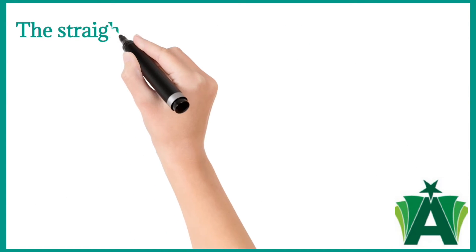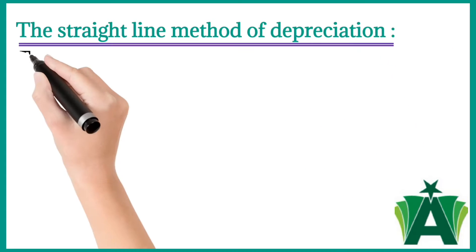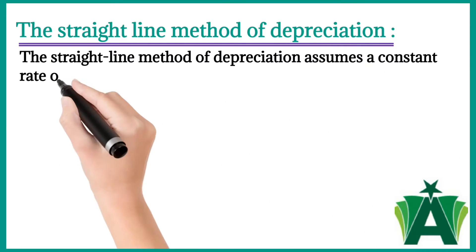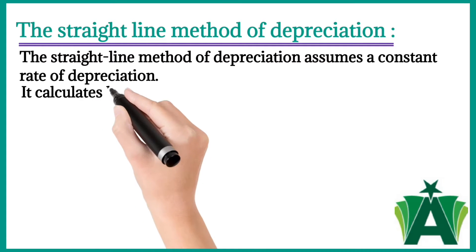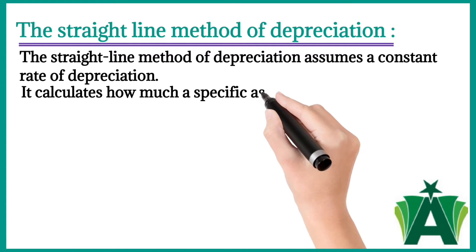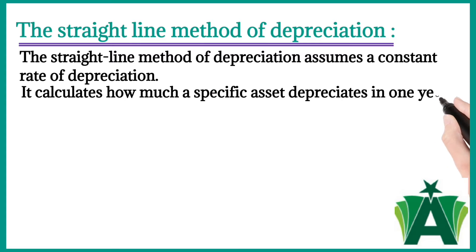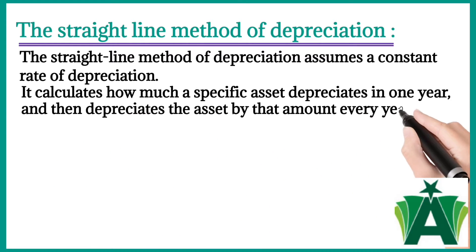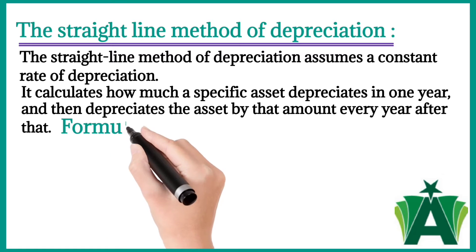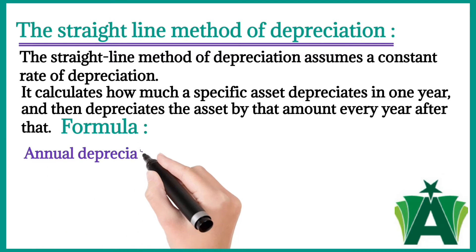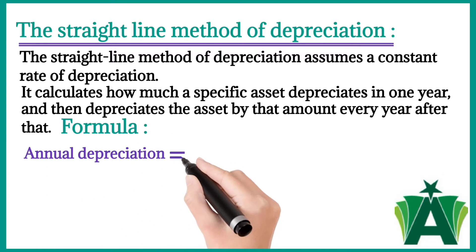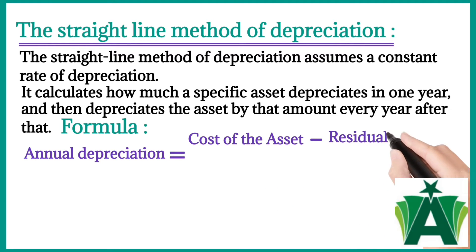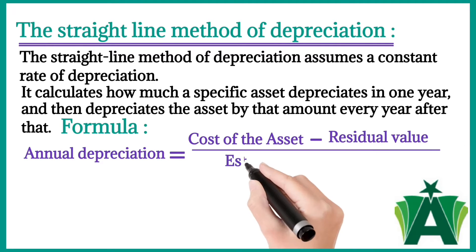The straight line method of depreciation assumes a constant rate of depreciation. It calculates how much a specific asset depreciates in one year and then depreciates the asset by that amount every year after. The formula is: annual depreciation equals cost of the asset minus residual value, divided by estimated economic life.